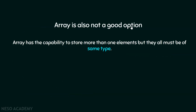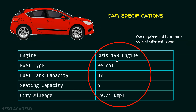Array is also not a good option. An array has the capability to store more than one element, but they all must be of the same type. We want to store more than one element within a single variable, but our requirement is to store data of different types. We can see that the car data consists of different types, and therefore array is not a good solution.